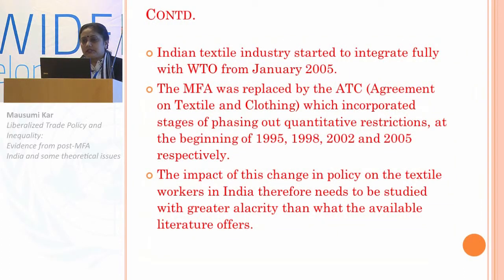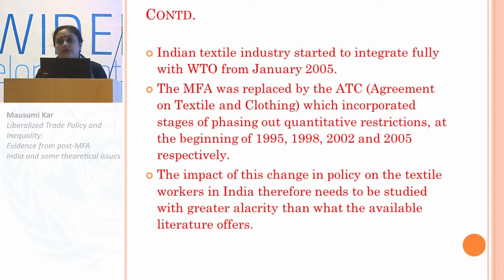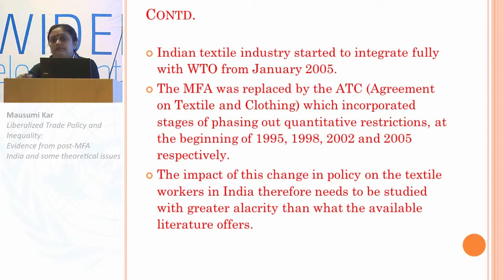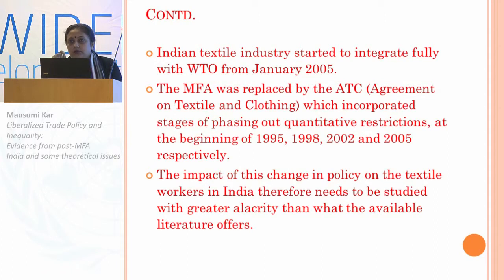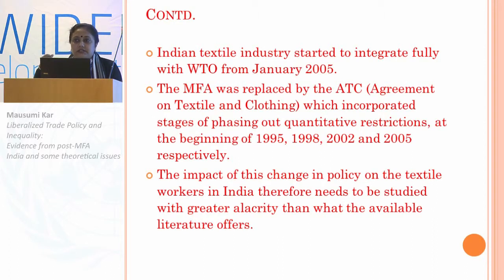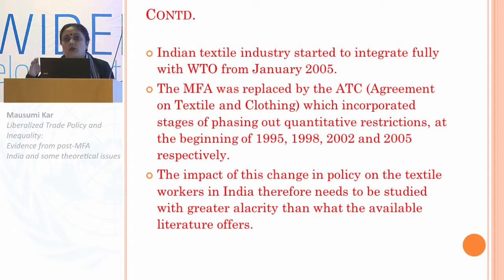The Indian textile industry started to integrate fully with WTO from January 2005, and the MFA — the Multi-Fiber Arrangement — was replaced by the ATC, the Agreement on Textiles and Clothing. The phase-out took place in four stages: on January 1, 1995, 16 percent of quotas were phased out; on January 1, 1998, a further 17 percent, making a cumulative 33 percent; by 2002, the cumulative effect was 51 percent; and on January 1, 2005, 100 percent of quotas were liberalized.